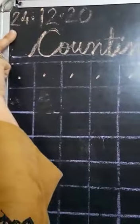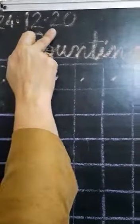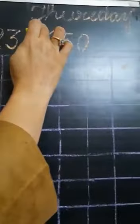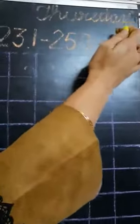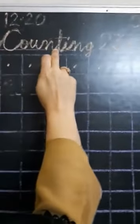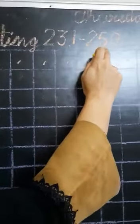So first of all write down the date. Date is 24.12.20. And here we will write the day. Day is Thursday, T-H-U-R-S-D-A-Y. And on the very first line write down the heading counting from 231-250. Leave the very first line and put dot like this.